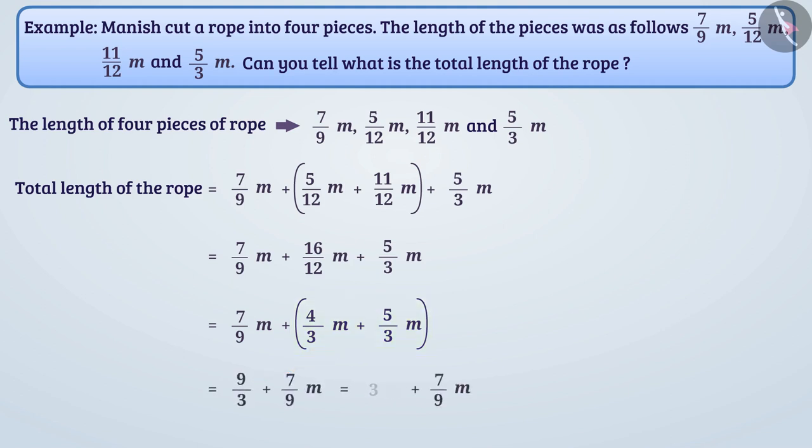Now 3 plus 7/9 is equal to 3 and 7/9 that is 34/9. Therefore, we can say that total length of the rope is 3 and 7/9 meters.